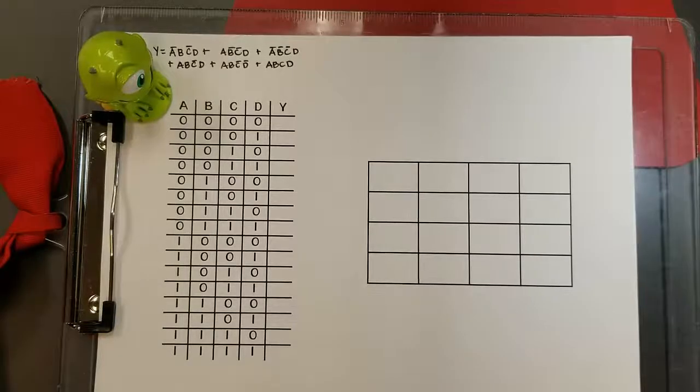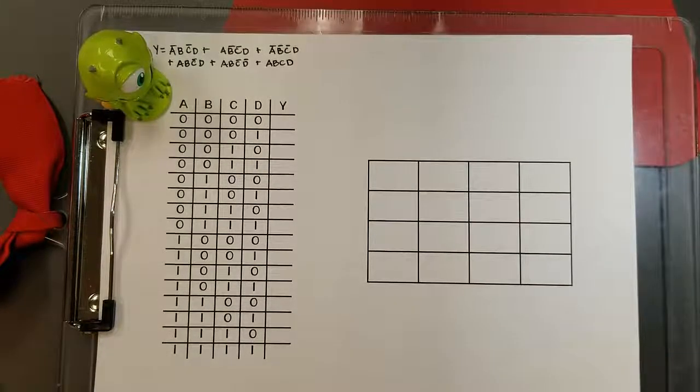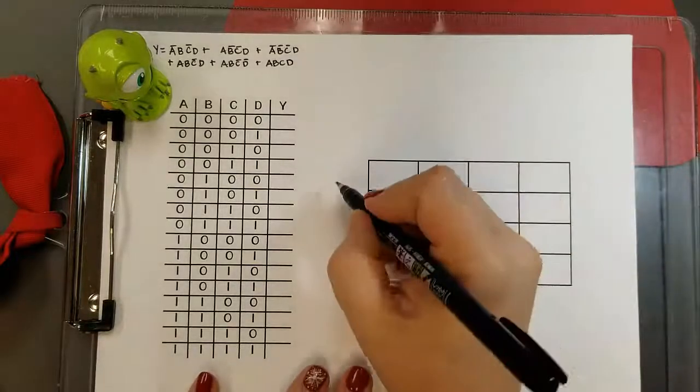Let's start with how we set up a kmap for our fourth variable expression. You can see here that I have my expression and truth table, and I've started to lay out the kmap.